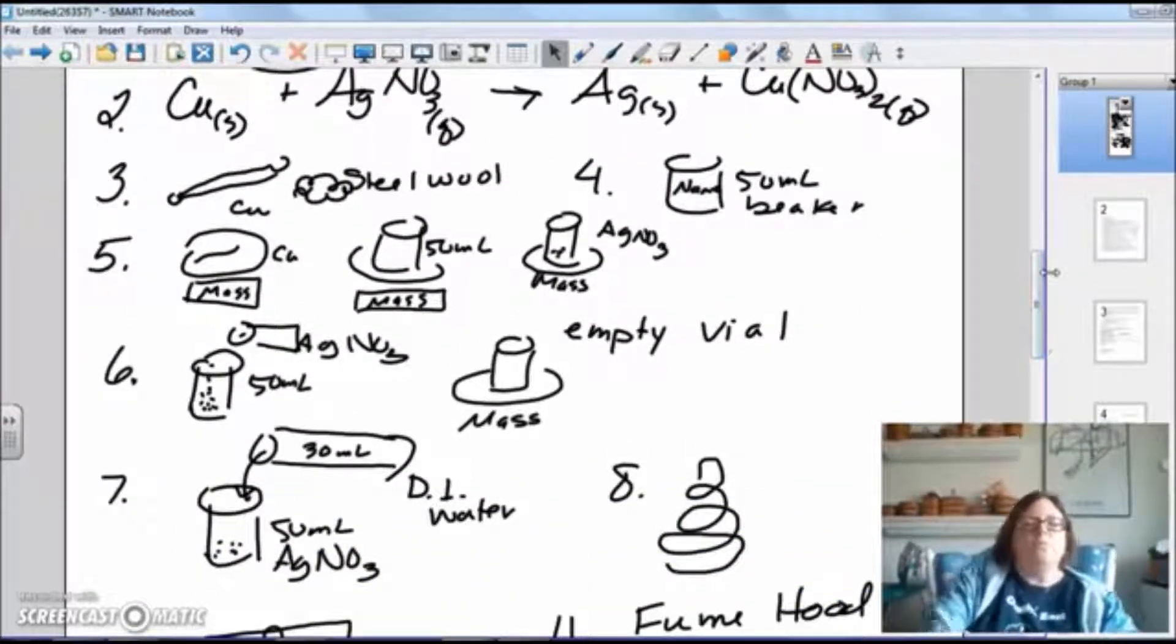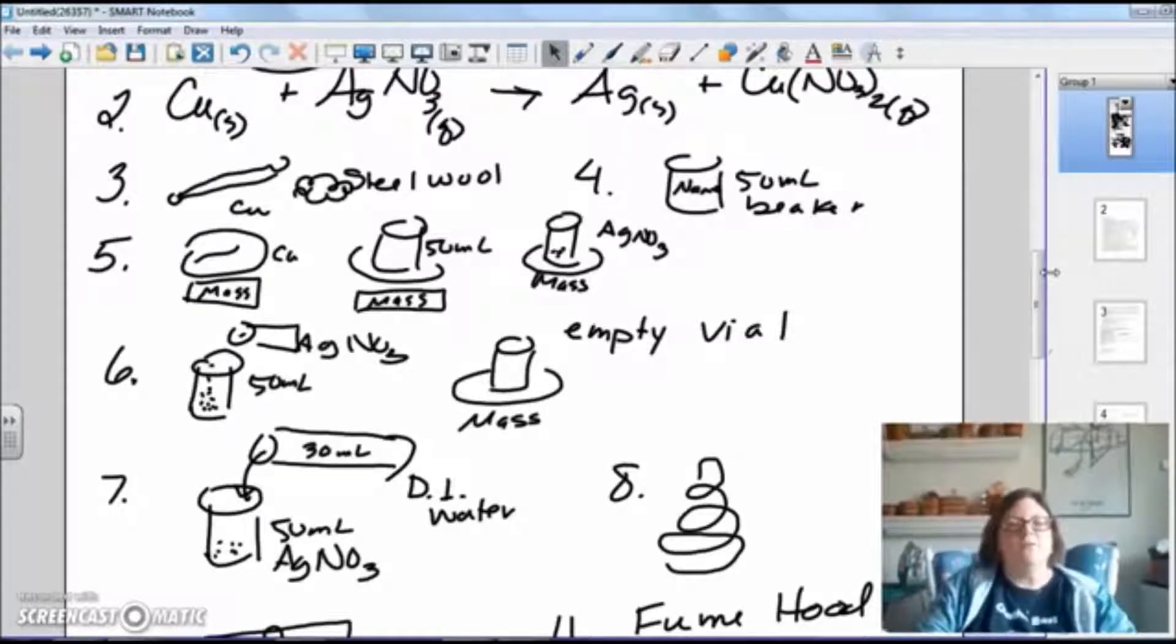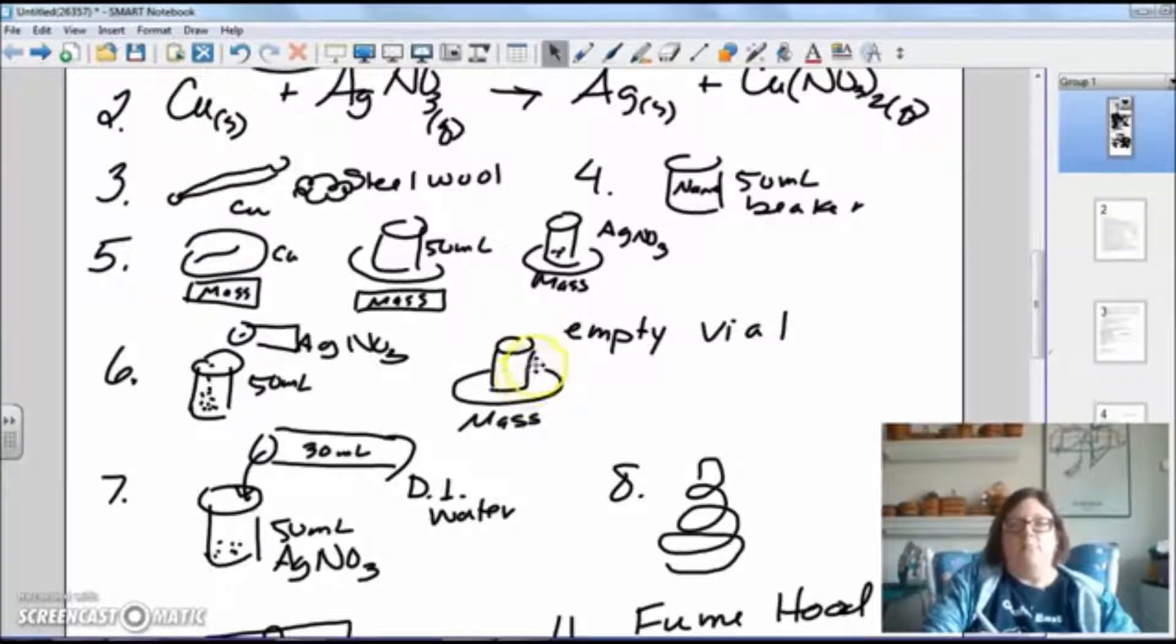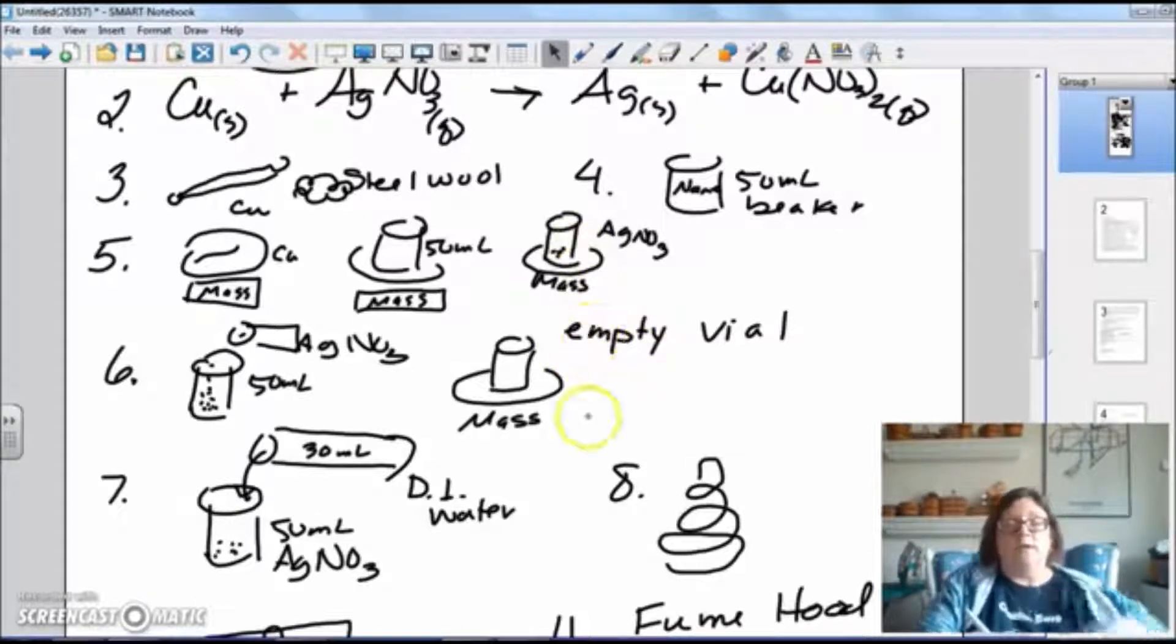Step six, you will pour the silver nitrate crystals into the 50 milliliter beaker. After that, we'll find the mass of the empty vial and you'll figure out how much silver you added to the beaker by subtracting the mass of this from the mass of the vial plus the silver nitrate.